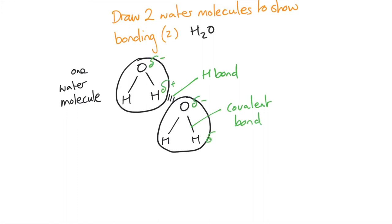You can label the covalent bond between the oxygen and the hydrogen and make sure you add your slightly negatives and slightly positive to show that it's a polar molecule.